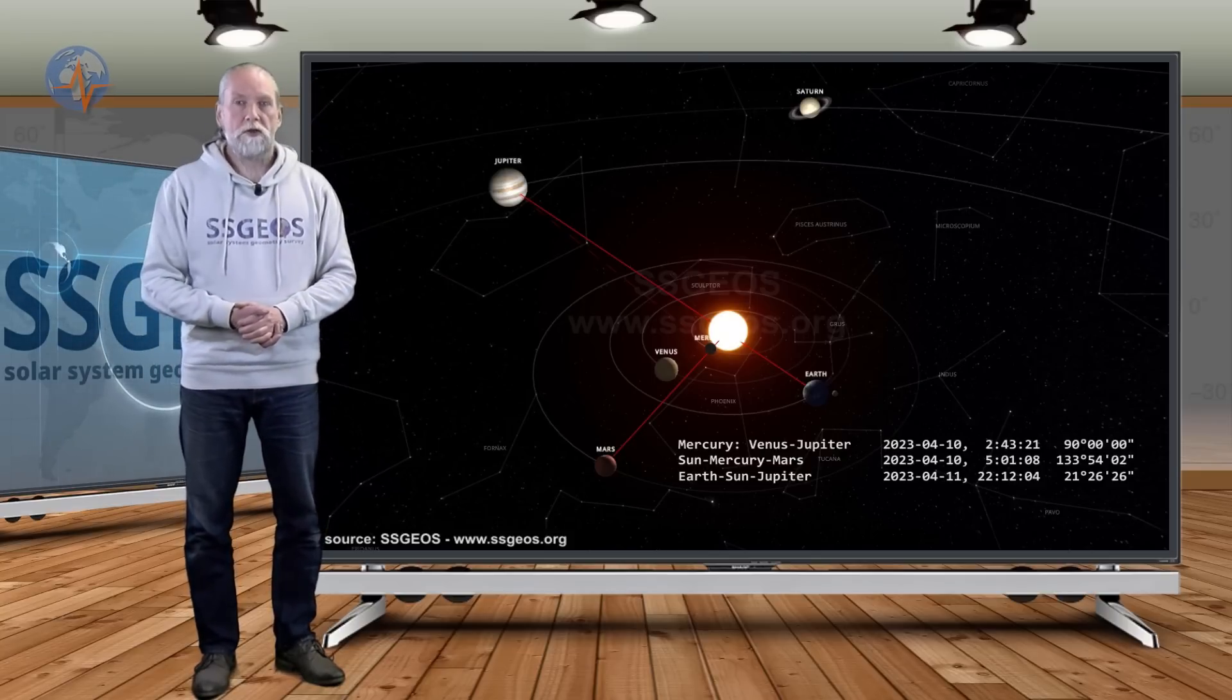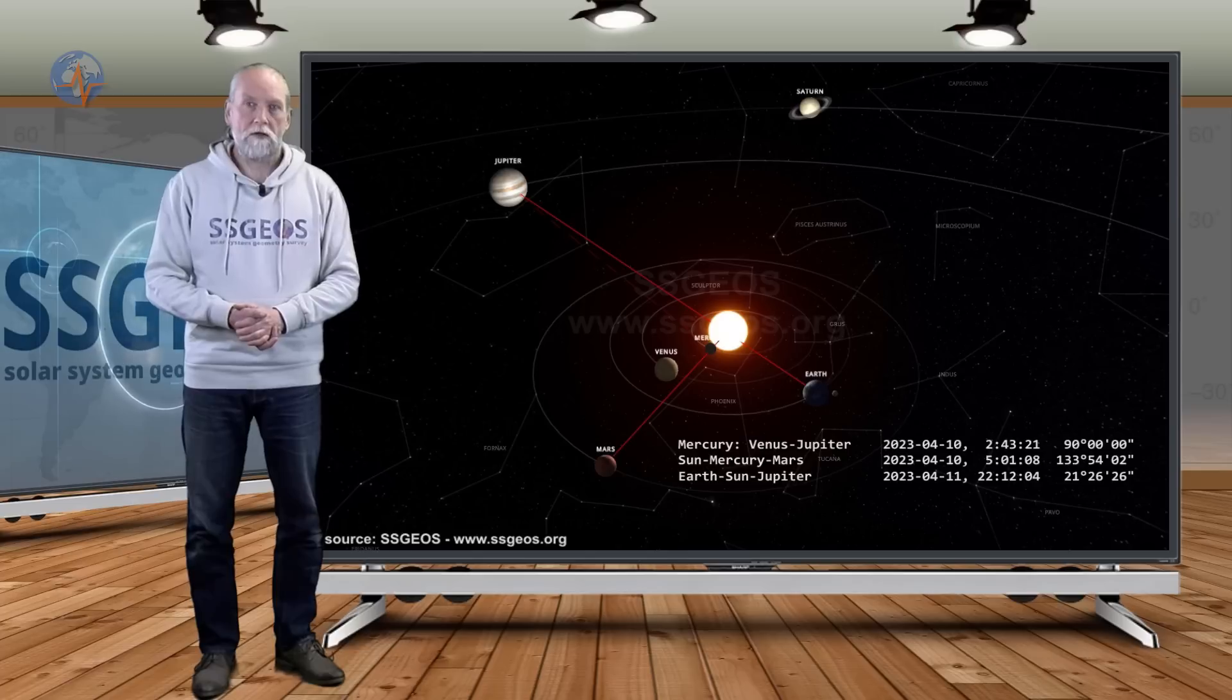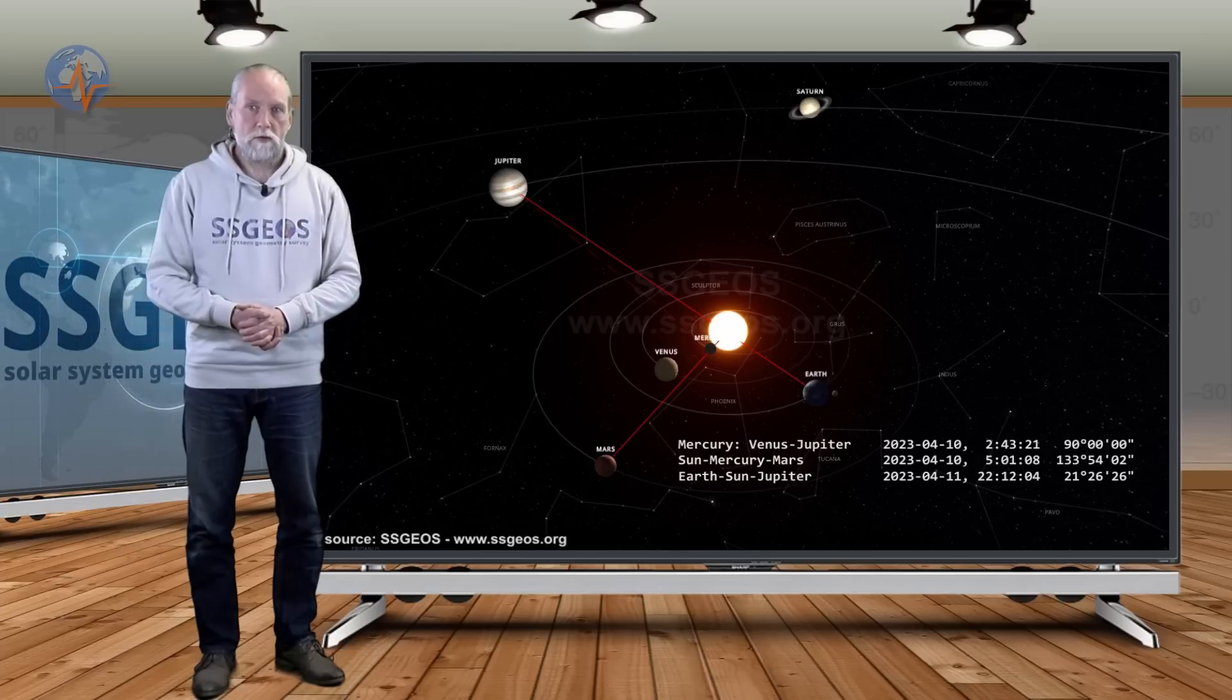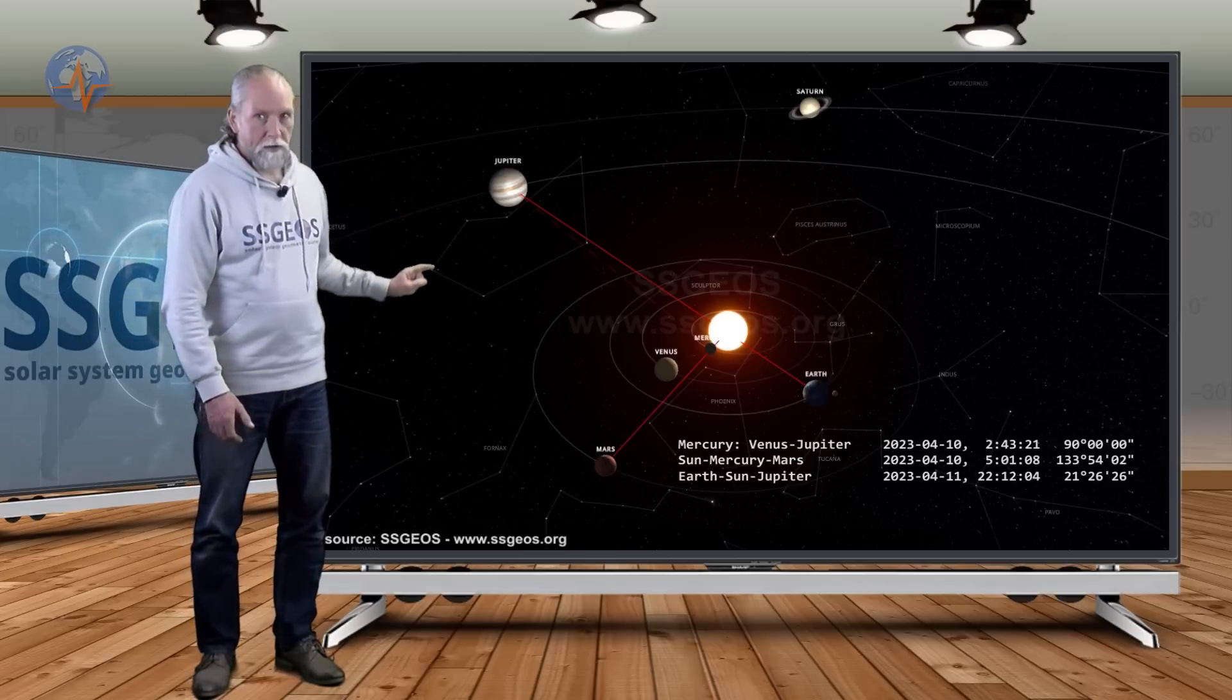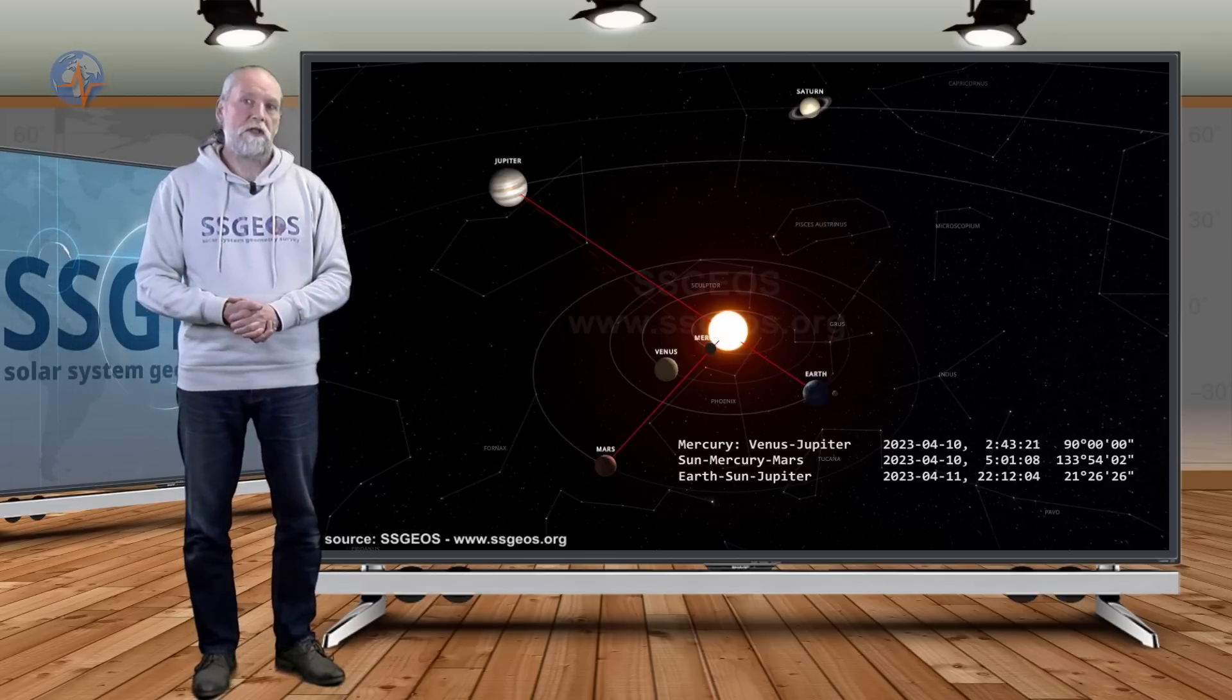The Earth-Sun-Jupiter conjunction on itself is not necessarily critical. The Moon doesn't make critical geometry at the same time either. But the Sun-Mercury-Mars conjunction tomorrow could result in some seismic increase.